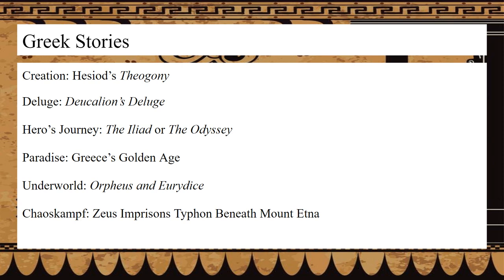The hero's journey can be indicated by one of two stories: the Iliad by Homer, which follows the Achaean Greeks as they siege the city of Troy, primarily focusing on the rage of Achilles; or the Odyssey, which follows the travels of Odysseus, a hero of the Trojan War, as he makes his way home despite constant divine interference preventing him from doing so.